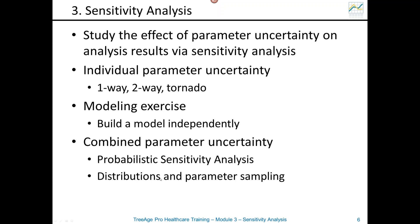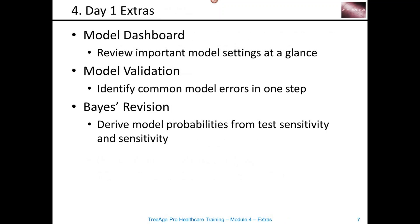Then we move on to module four, which is really just the end of day one, where we show you a couple of useful tools that aren't part of the fundamental core materials. A dashboard is a way to take someone else's model and see all the important elements within it. Validation is a way to identify a number of problems that may be in your model all at once so you can go fix them. And Bayes revision is a way to derive probabilities from test sensitivity and specificity — in terms of how many positives you'll get and how many of those positives are true positives. That doesn't take very long.